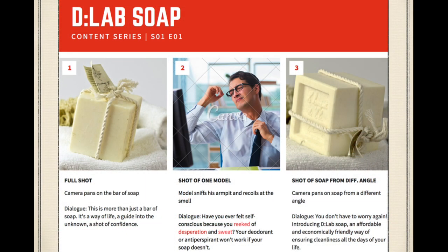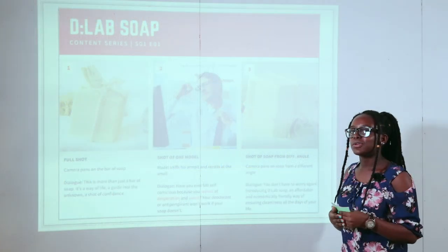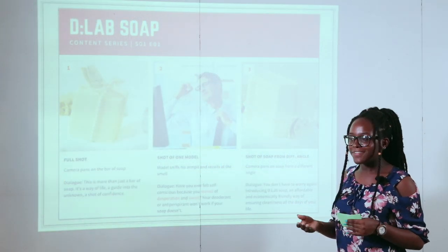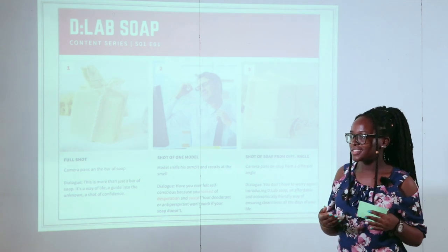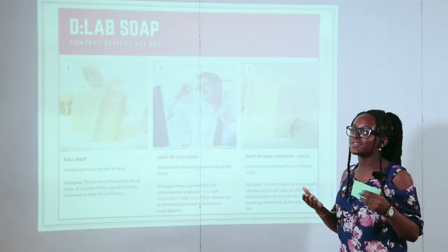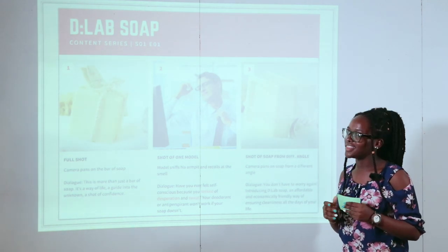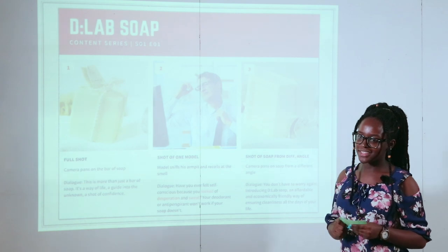The next is a shot of a model who has smelled his armpits and realises it smells very bad. The dialogue here would be: 'Have you ever felt self-conscious because you've reeked of desperation and sweat? Your deodorant or antiperspirant won't work if your soap doesn't.' So we're acknowledging the fact that there's stuff like deodorant and antiperspirant — but if you don't use the right soap, which is our soap, then there's no way that these things are going to work.